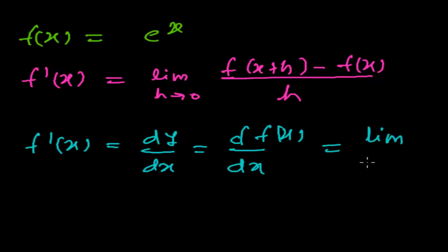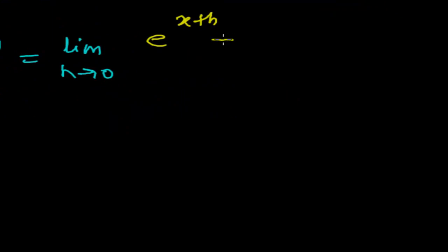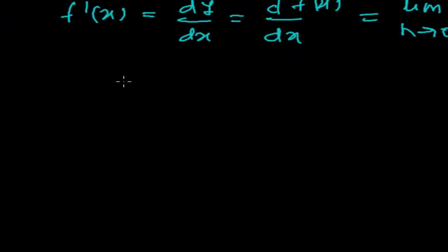So we have: limit as h tends to 0. Now I'll plug in the value x plus h into the function. Think of it like a machine — whatever you put in, you get the corresponding output. When I put x plus h, I get e to the power x plus h. And when I put just x, I get e to the power x. So the expression becomes: e to the power (x plus h) minus e to the power x, all divided by h.